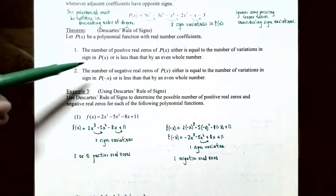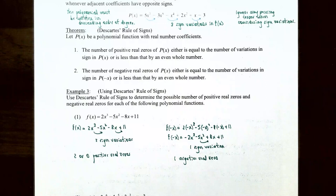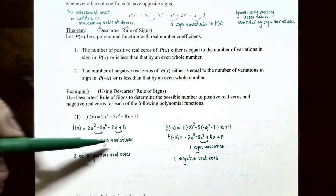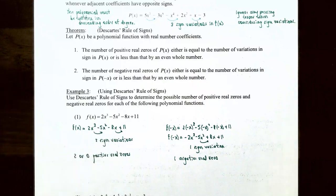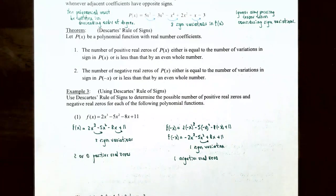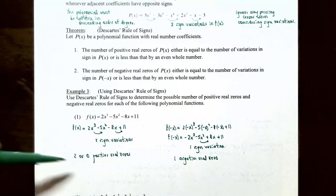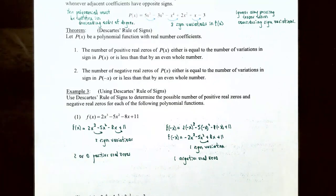Two sign variations tells us about possible positive real zeros for f of x. So f of x will have either two positive real zeros or an even number less than two. Since two minus two is zero, the possibilities are two or zero positive real zeros.